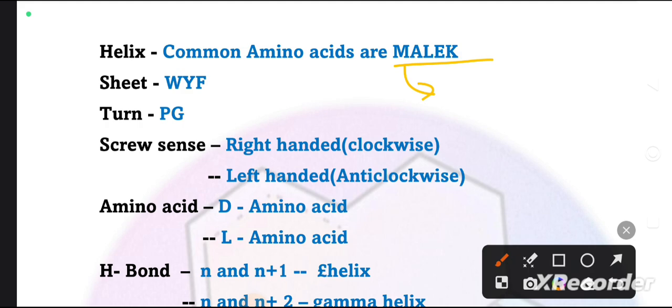What will these amino acids prefer to become? If this is a sequence, what will they prefer - helix or sheet? If we look at aromatic amino acids - tryptophan, tyrosine, phenylalanine - they prefer to form sheets as well as helix.